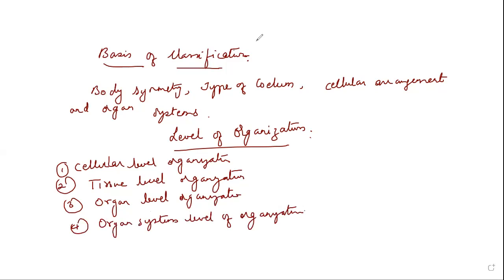Let us discuss one by one the different levels of organization. The first one is cellular level organization. When loosely arranged cells form aggregates, the organization is called cellular level organization. A better example we have is sponges.